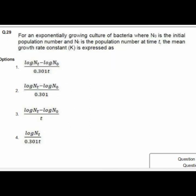Question 29: For an exponentially growing bacterial culture, where N0 is the initial population and Nt is the population at time t, the mean growth rate constant k is expressed as option 1: log(Nt) minus log(N0) divided by 0.301t.